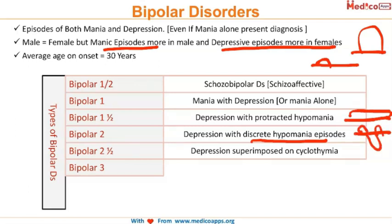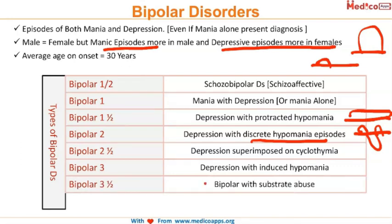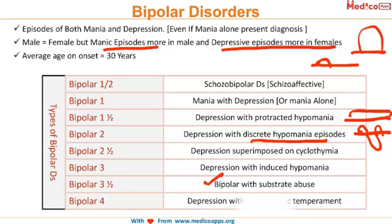Bipolar two and a half is depression superimposed on cyclothymia. Bipolar three is depression with induced hypomania. Bipolar three and a half is bipolar with substance abuse, and bipolar four is depression with hyperthymic temperament. These are the classifications of bipolar disorder.